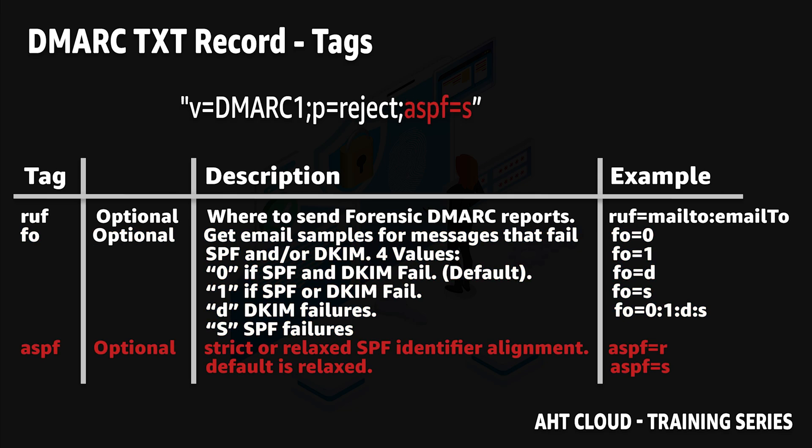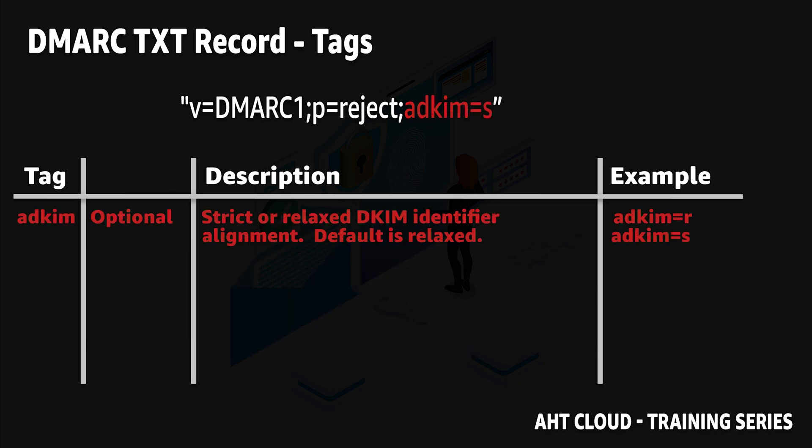The aspf tag is an optional tag you can use to specify if you want to set your SPF policy to strict or relaxed. By default, if you don't include this option, it is always strict, which is your best option. Remember, your SPF policy basically makes sure all emails sent using your domain are authorized. We also have the adkim tag, which is identical to the aspf tag but for your DKIM policy.